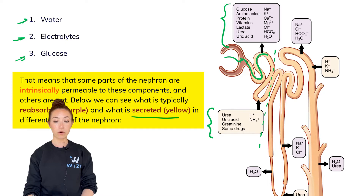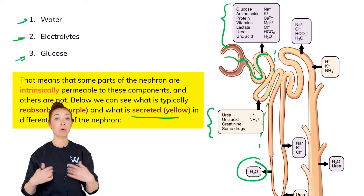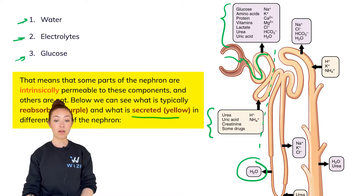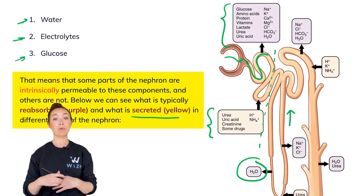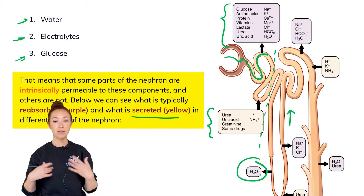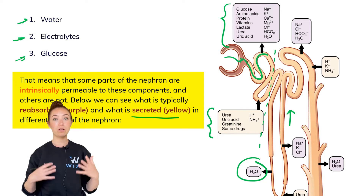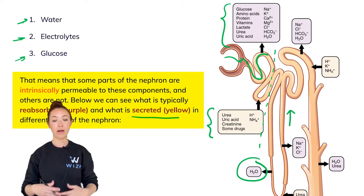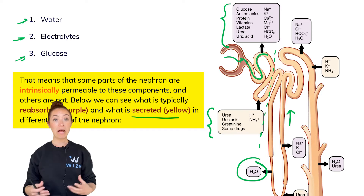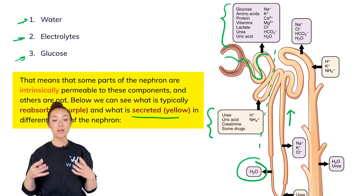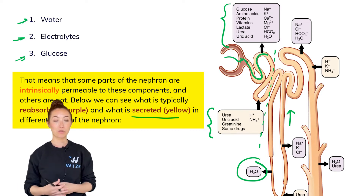Other parts of the nephron have different permeabilities. For example, the descending loop of Henle is very permeable to water, but that's not the case for the ascending loop of Henle — it is not permeable to water at all. That explains what they actually do to the filtrate, and we'll cover those in a lot more detail as we move on, but I just wanted to introduce these concepts now so that you can keep them in mind as we try to memorize the small details.